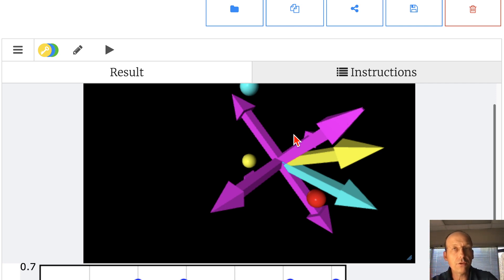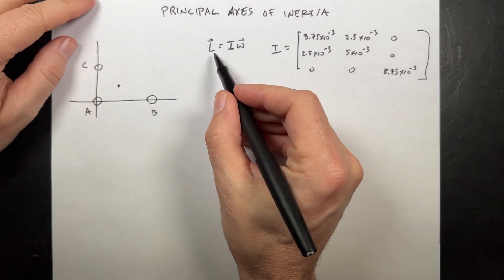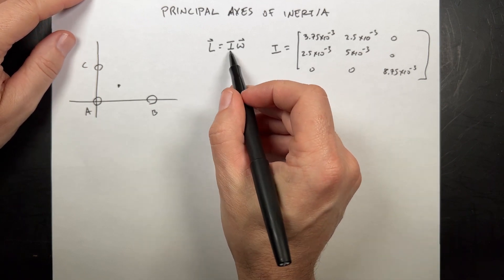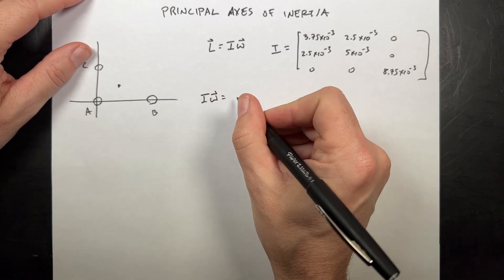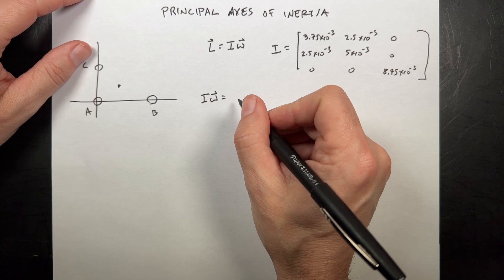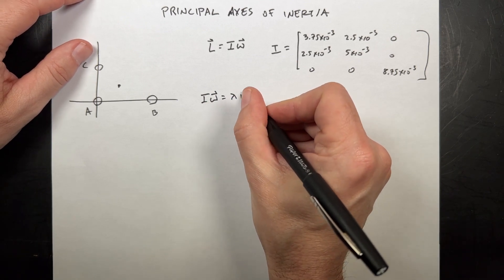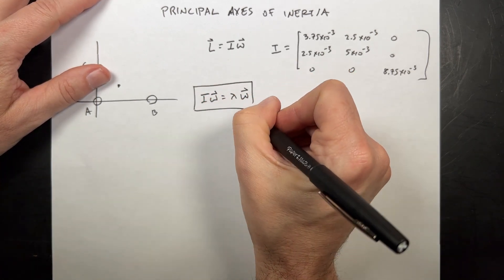The real way to do it is with the eigenvalue problem. Back to paper. Here is the equation: L equals I omega. I want to find cases where I omega — which would be L — is equal to some scalar multiple of omega. It doesn't have to be the same magnitude, so we say it's equal to lambda omega. This equation is really important — this is the eigenvalue equation.